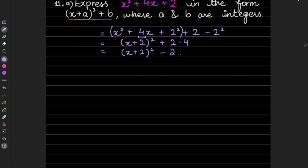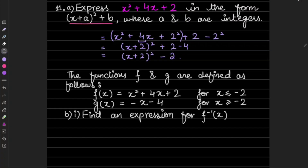That is the first step of making it into completed square form. Now part b says the functions f and g are defined as follows: f(x) = x² + 4x + 2 for x ≤ −2. Find an expression for f inverse. For f inverse, what do we do? We change the subject from y to x, then exchange that with f inverse and change the variables.